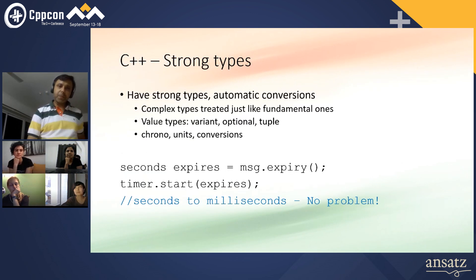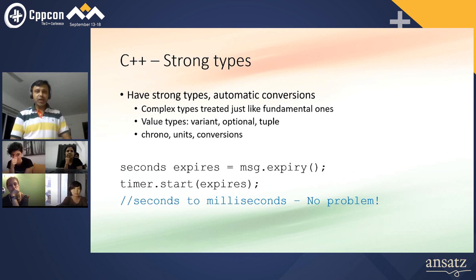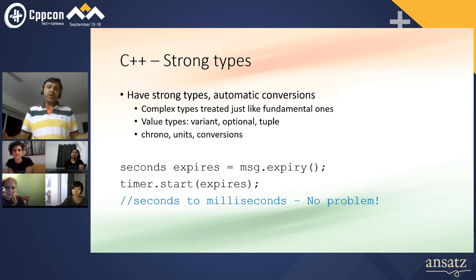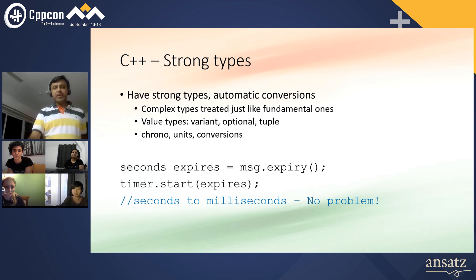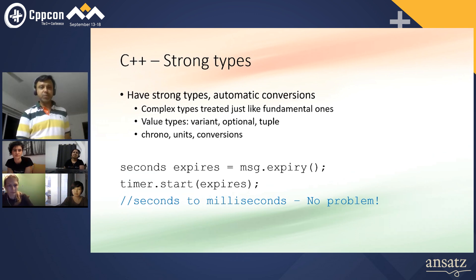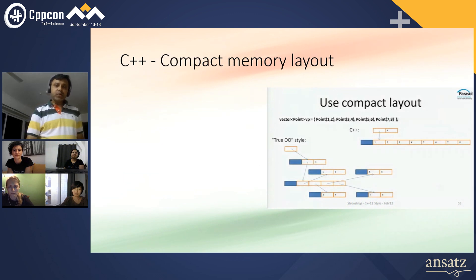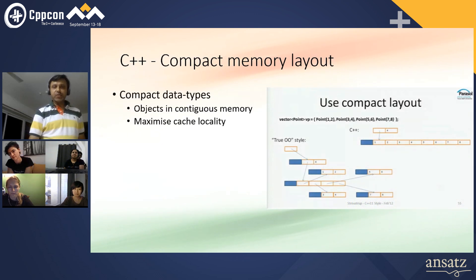Strong types with automatic conversions — value types help you not have to manage lifetimes manually. Conversions are automatically managed. As you see in this example, seconds easily converts into microseconds, no problem, and it's always going to be correct.